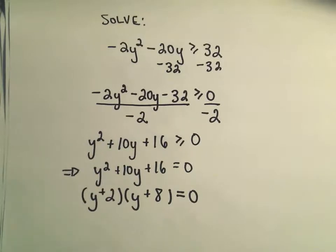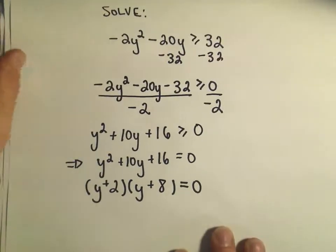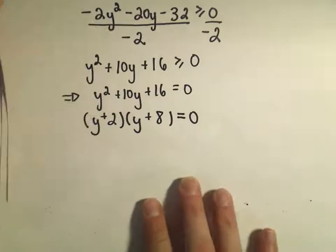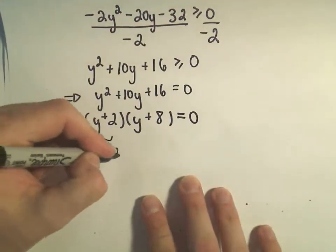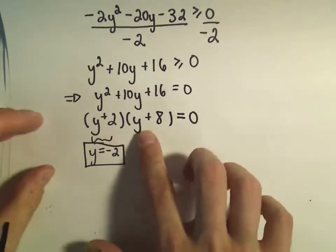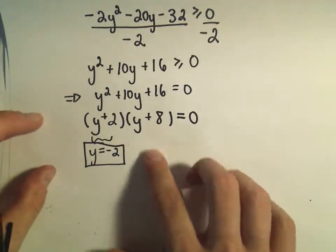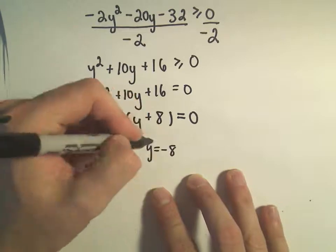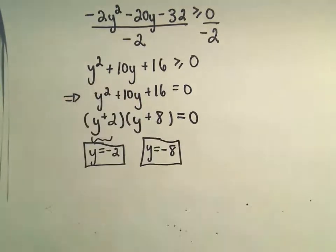If I were to solve, I would set y plus 2 equal to zero, and that would give me the solution y equals negative 2. And if we set y plus 8 equal to zero and subtract 8, we'll get y equals negative 8 as our other solution.